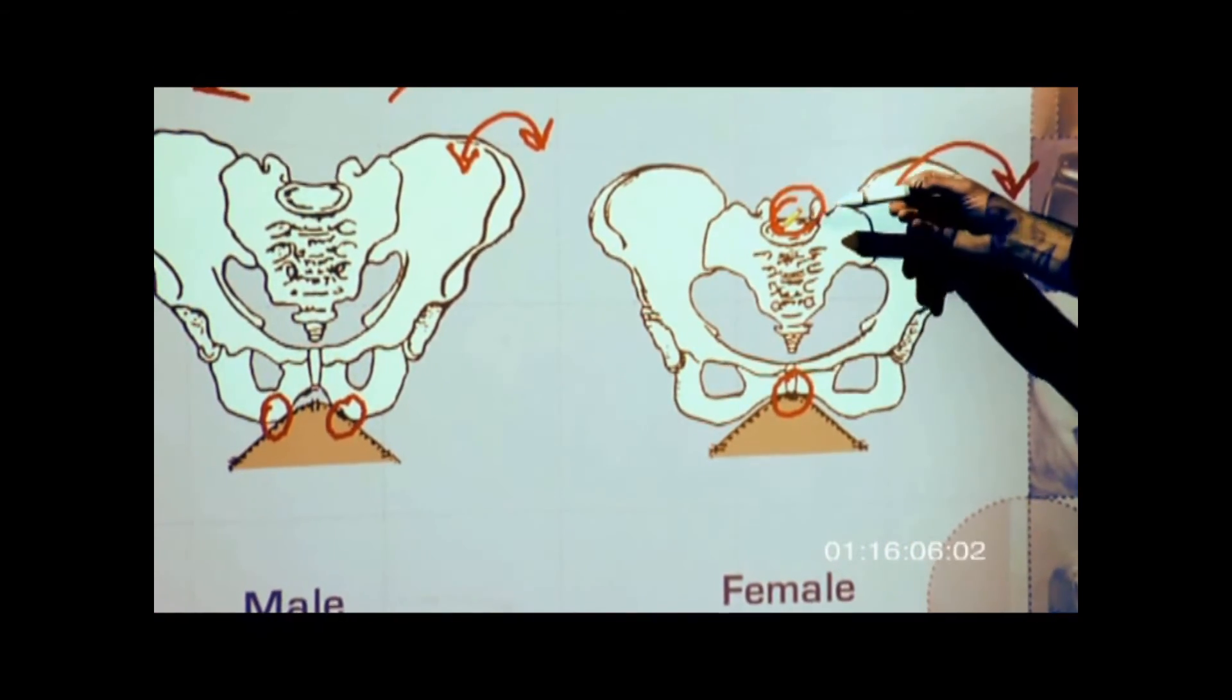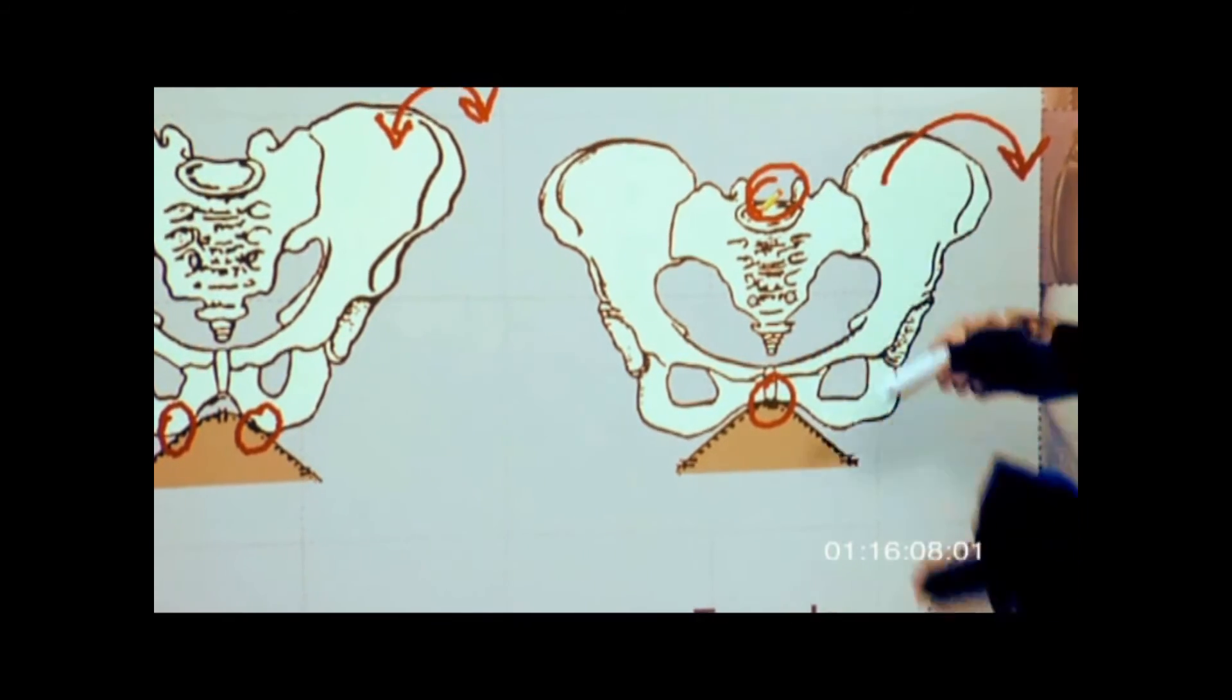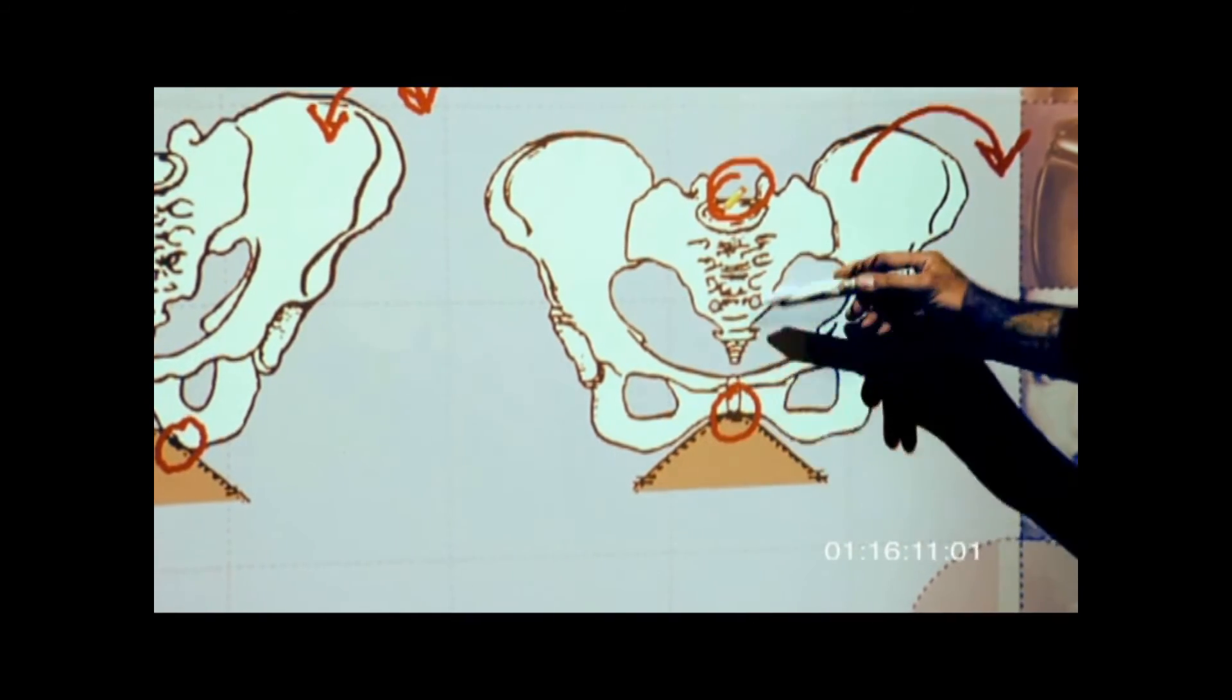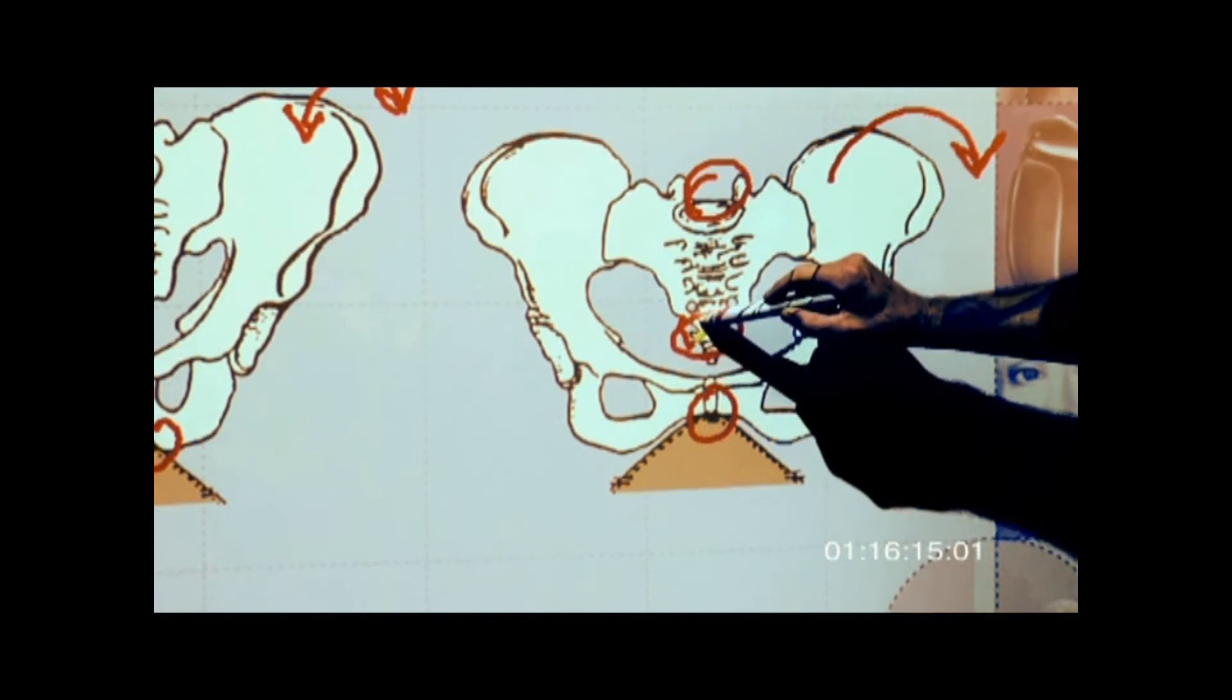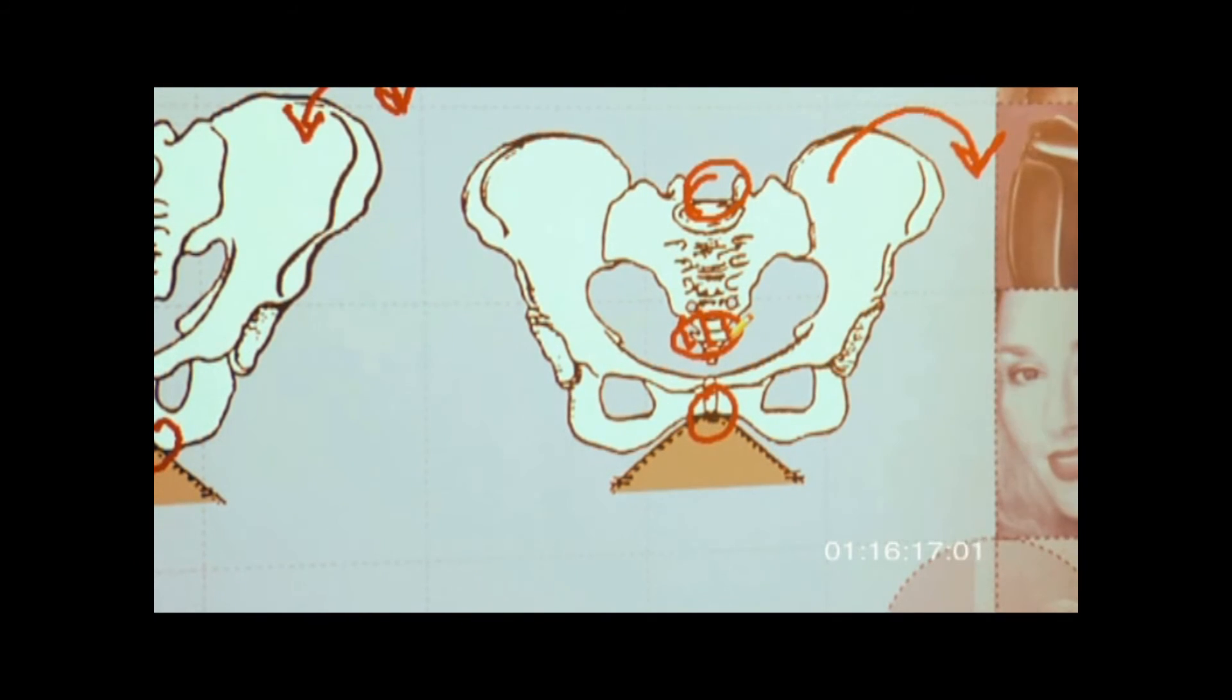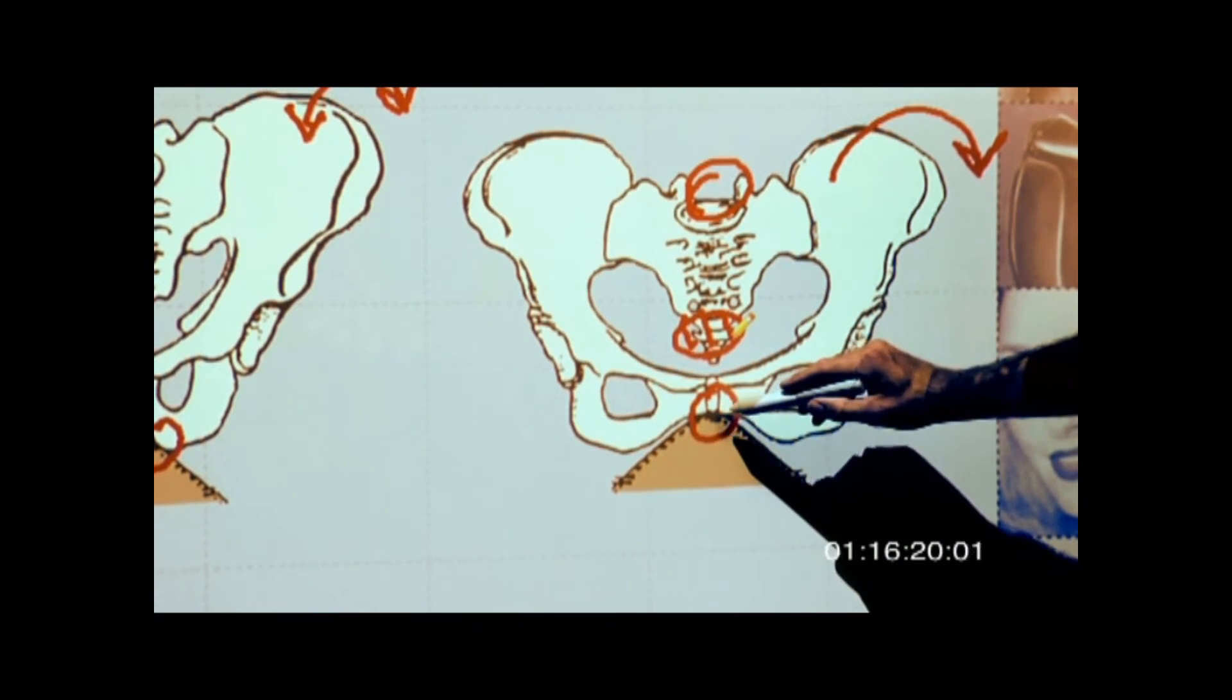Very common disc problem in L4 and L5. And when they roll back on their seat, this area here, not uncommon that people say I have a lot of pressure on my tailbone or my pubic symphysis.